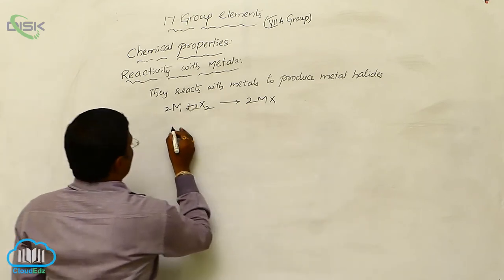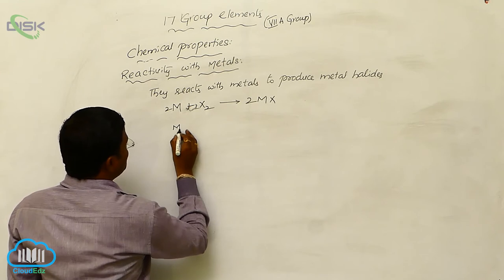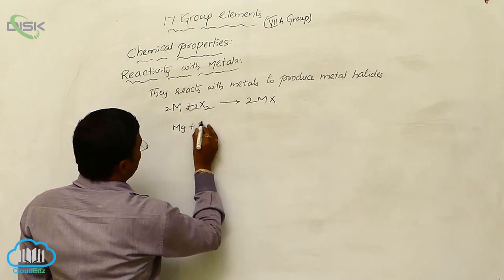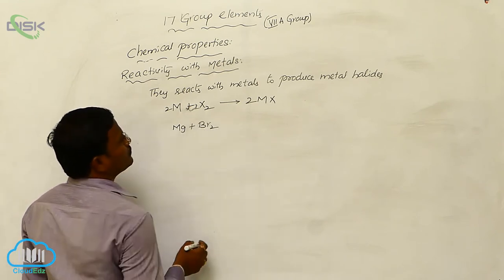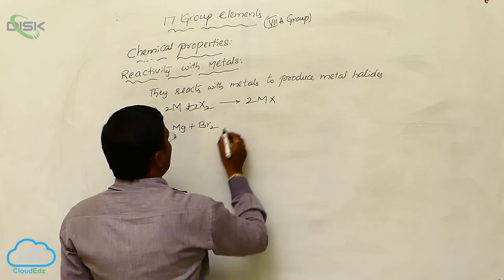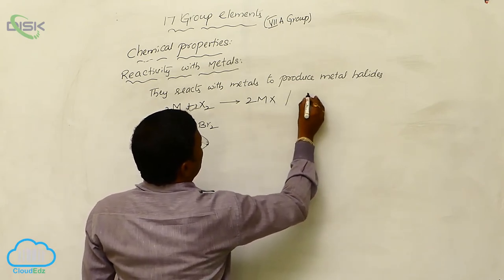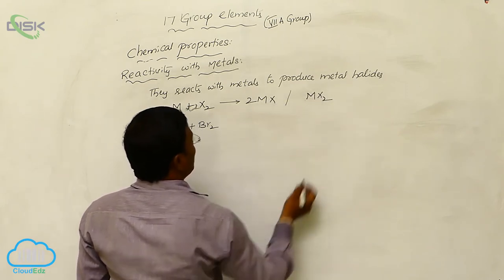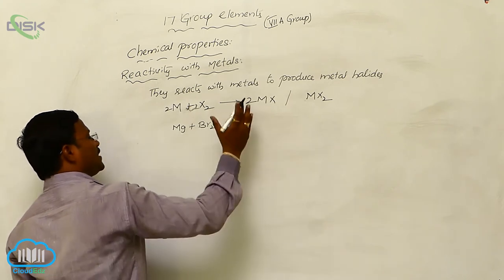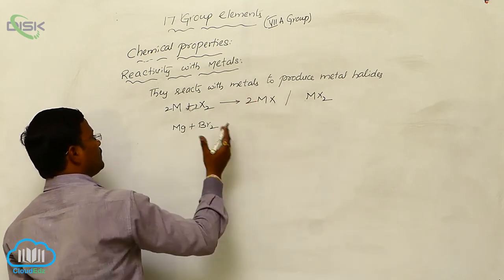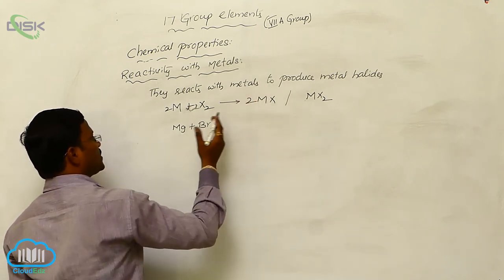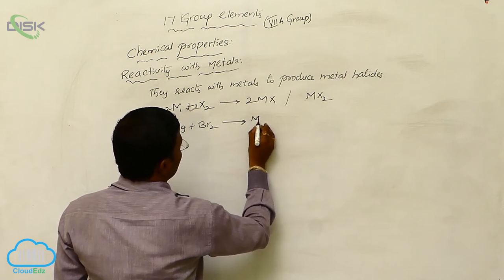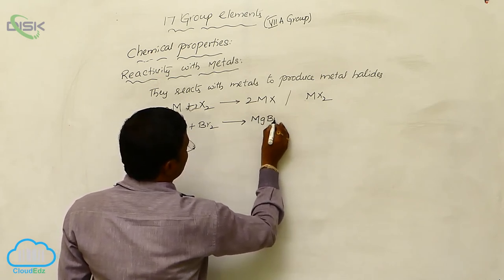Especially magnesium when reacted with bromine — it produces MgBr₂. So MX or MX₂ types of metal halides result when metals are reacted with halogens.